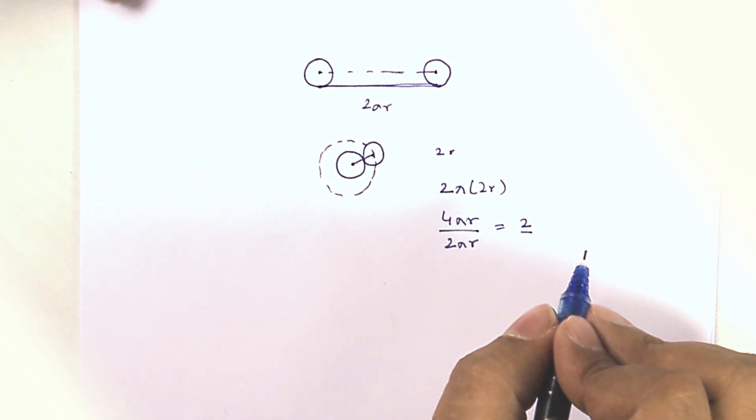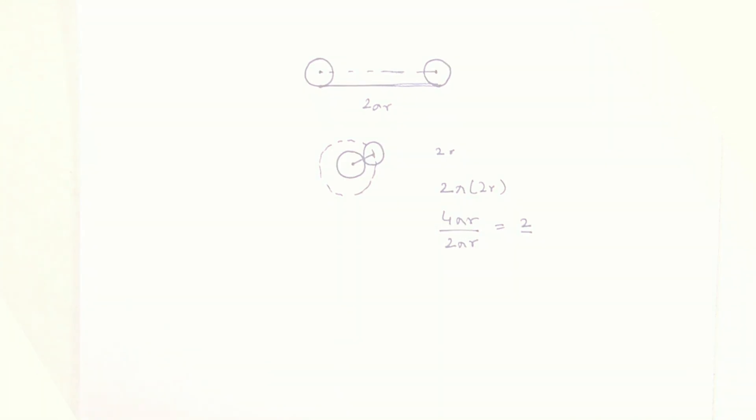So that's the basic idea why it goes around two times. And you can actually take two coins and try this out. There is a very interesting problem based on the same which will be included in the problem set.